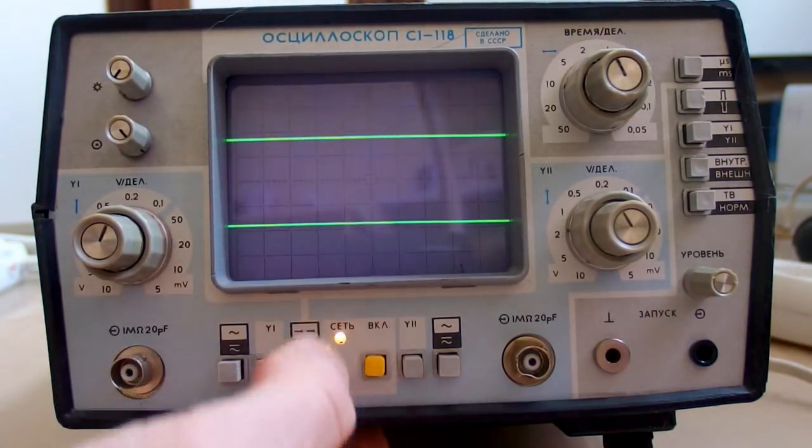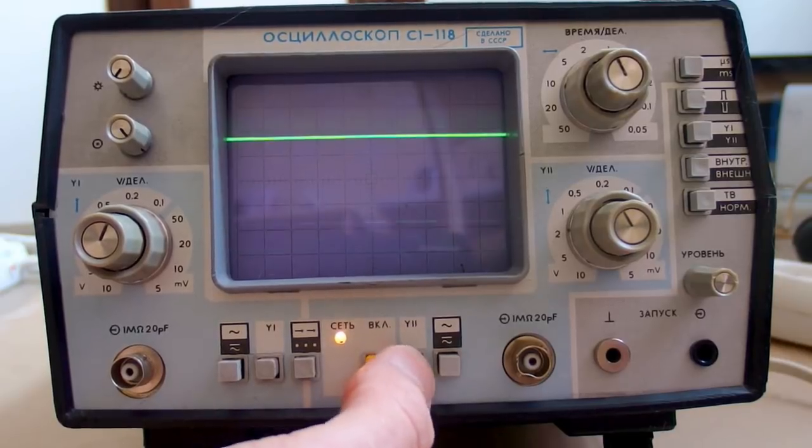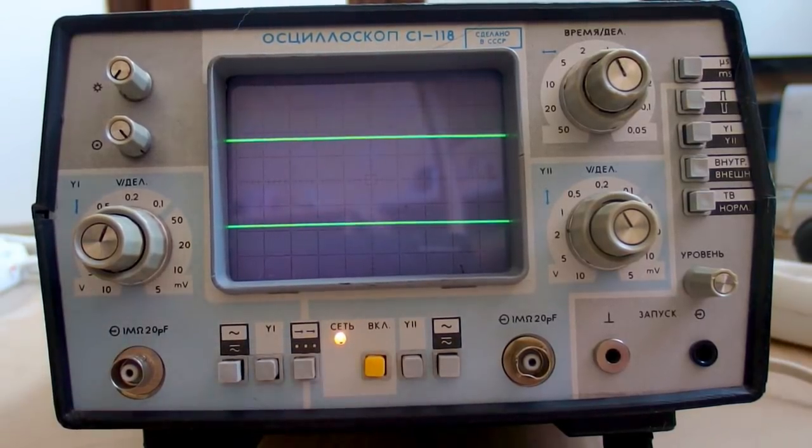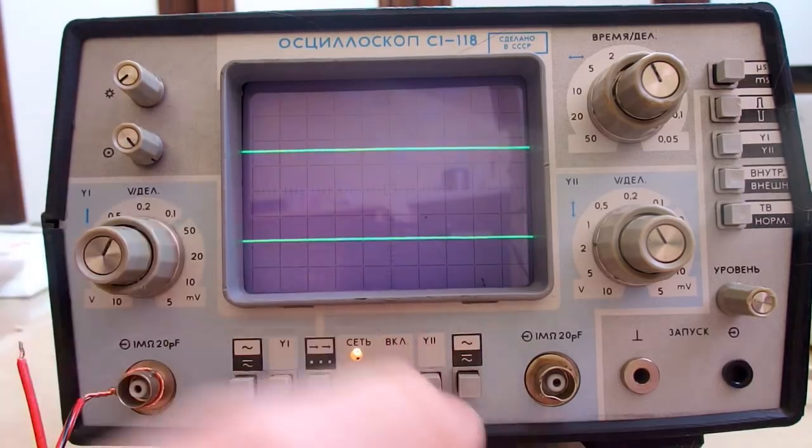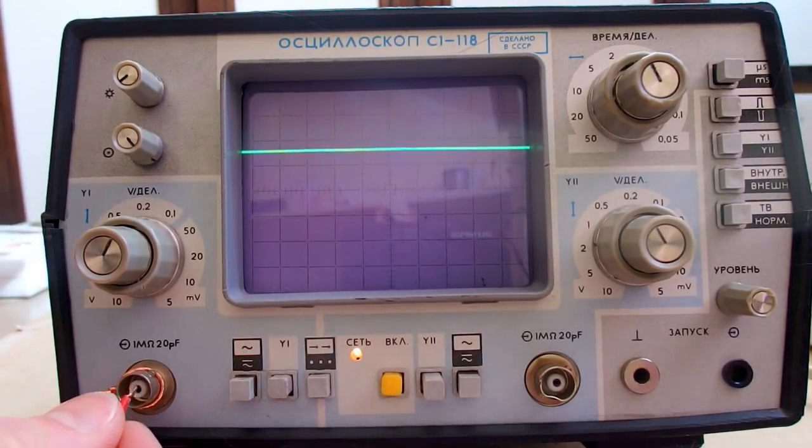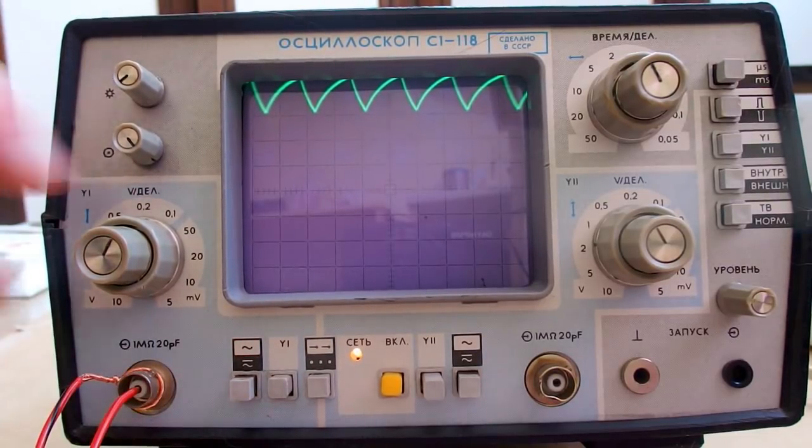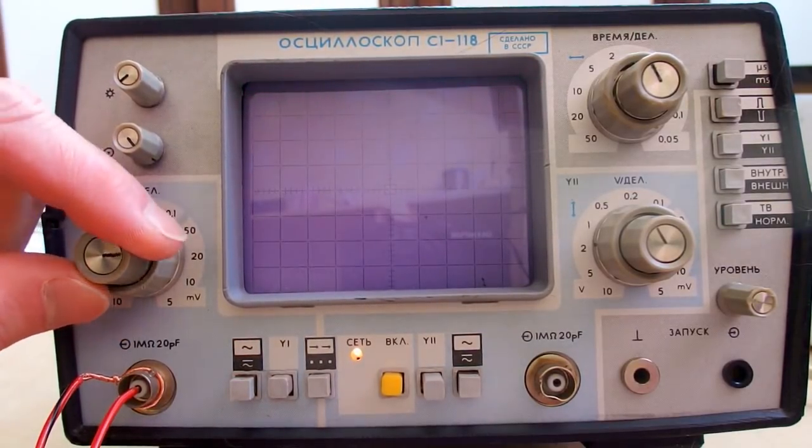And it has two channels and you can turn one of them off. Or the other one if you need just one channel. So let's turn one channel off for simplicity and let's try to connect some signal to it. And of course I should use a probe. You don't have to tell me. Now there should be some signal.